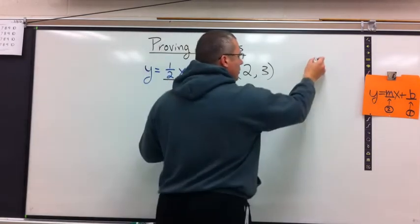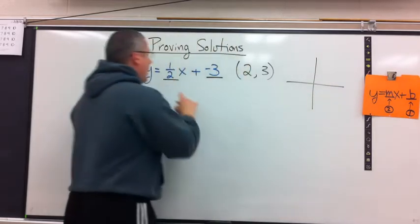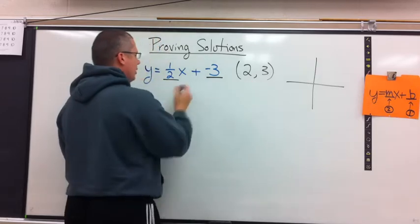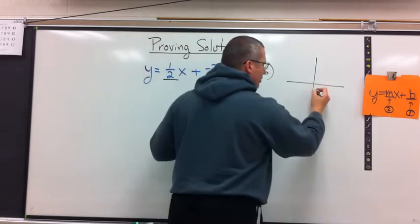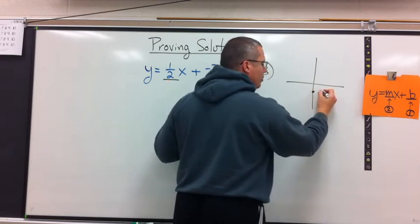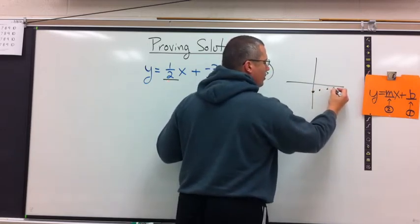I could graph it. I can graph this and figure out, is this ordered pair part of my line? I would start at negative 3. Down negative 3. From there I would go up 1, right 2. Up 1, right 2. Up 1, right 2.